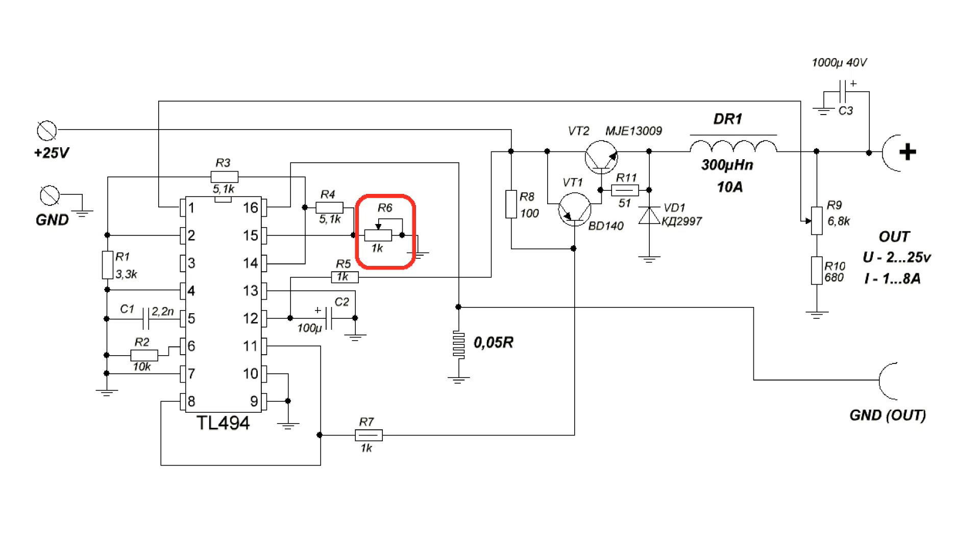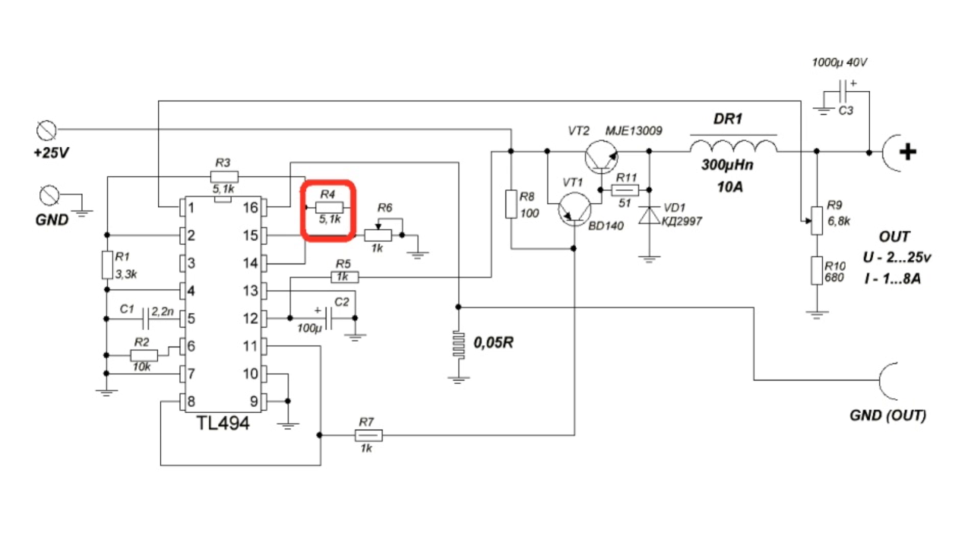For the current limit is responsible a variable resistor R6. The upper limit of the output current can change the selection of resistor R4. I don't advise to take currents more than 7 or 8 amperes, although you can have also 10 amperes.